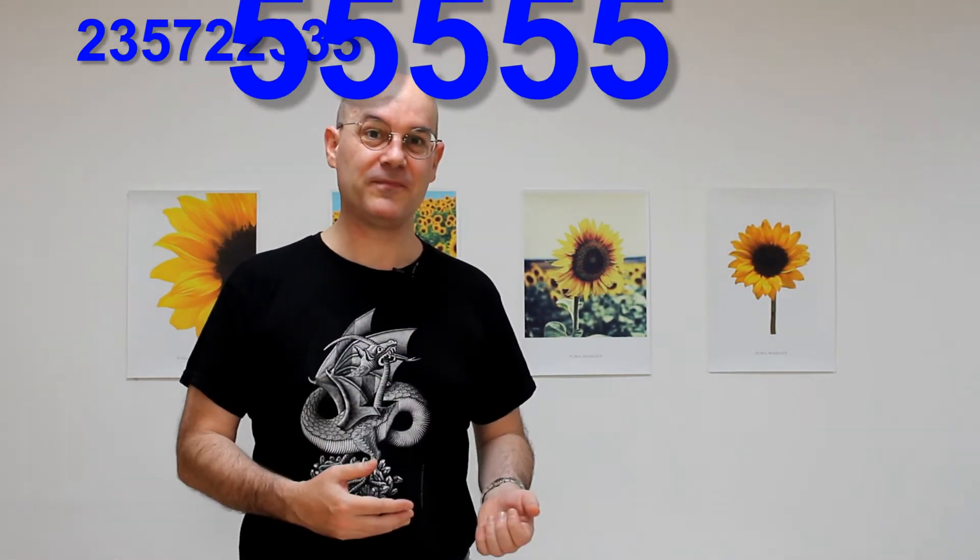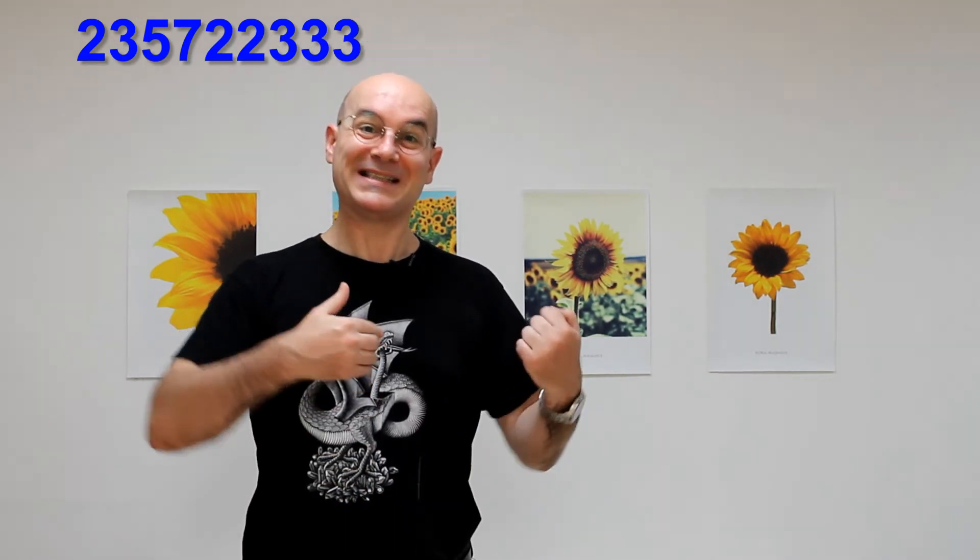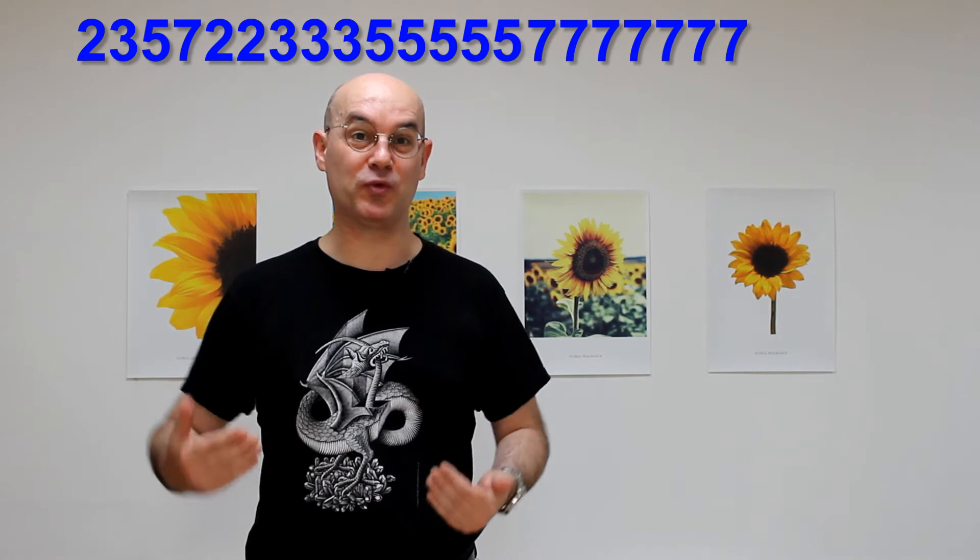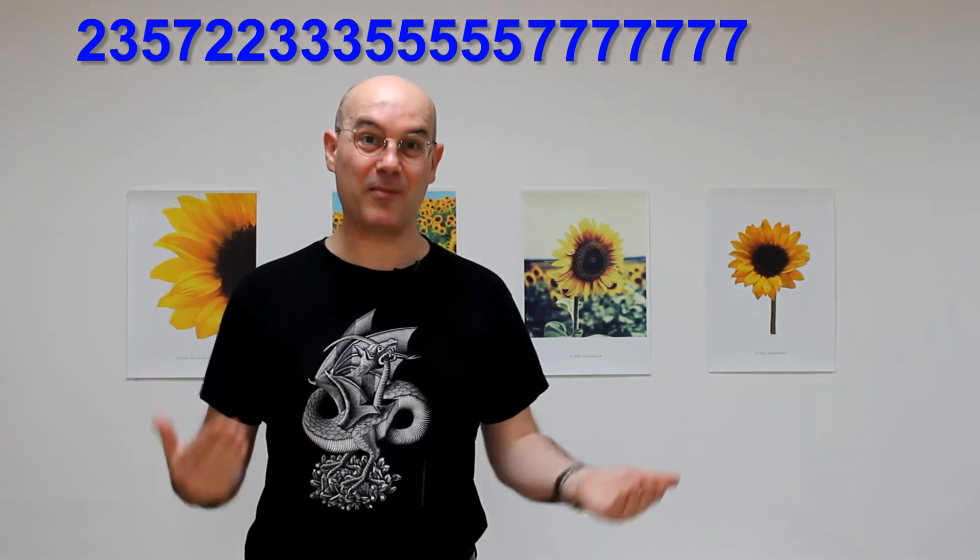So, we wrote 2, 3, 5, 7, and the 2 here is telling us what to do first. 2 means that now we are going to write 2 2's. The 3 tells you to write 3 3's. The 5 tells you to write 5 5's. The 7, 7 7's. And there you are, a 21-digit prime number.